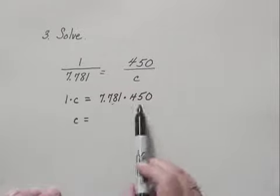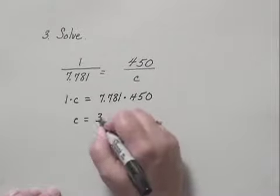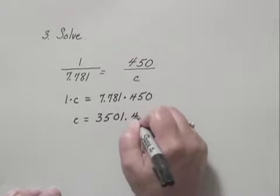1 times C is C. 7.781 times 450 is 3,501.45.